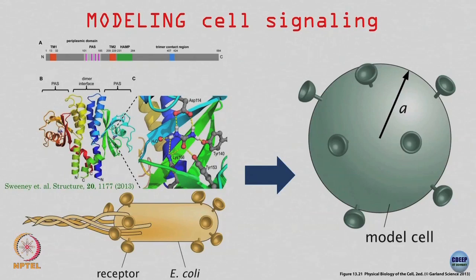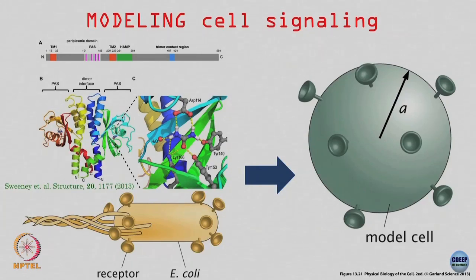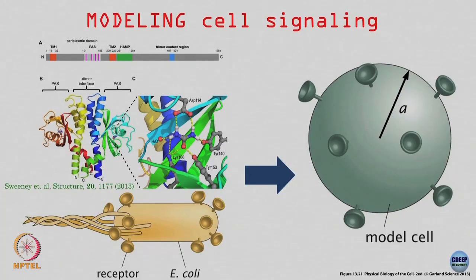The cell has some m number of receptors distributed homogeneously and uniformly on its surface. In reality, chemoreceptors in E. coli are clustered at the ends of the cell, but for this calculation I will say the receptors are spread uniformly over the surface. Because the cell is a perfect sphere with uniformly distributed receptors, I assume the concentration is spherically symmetric.